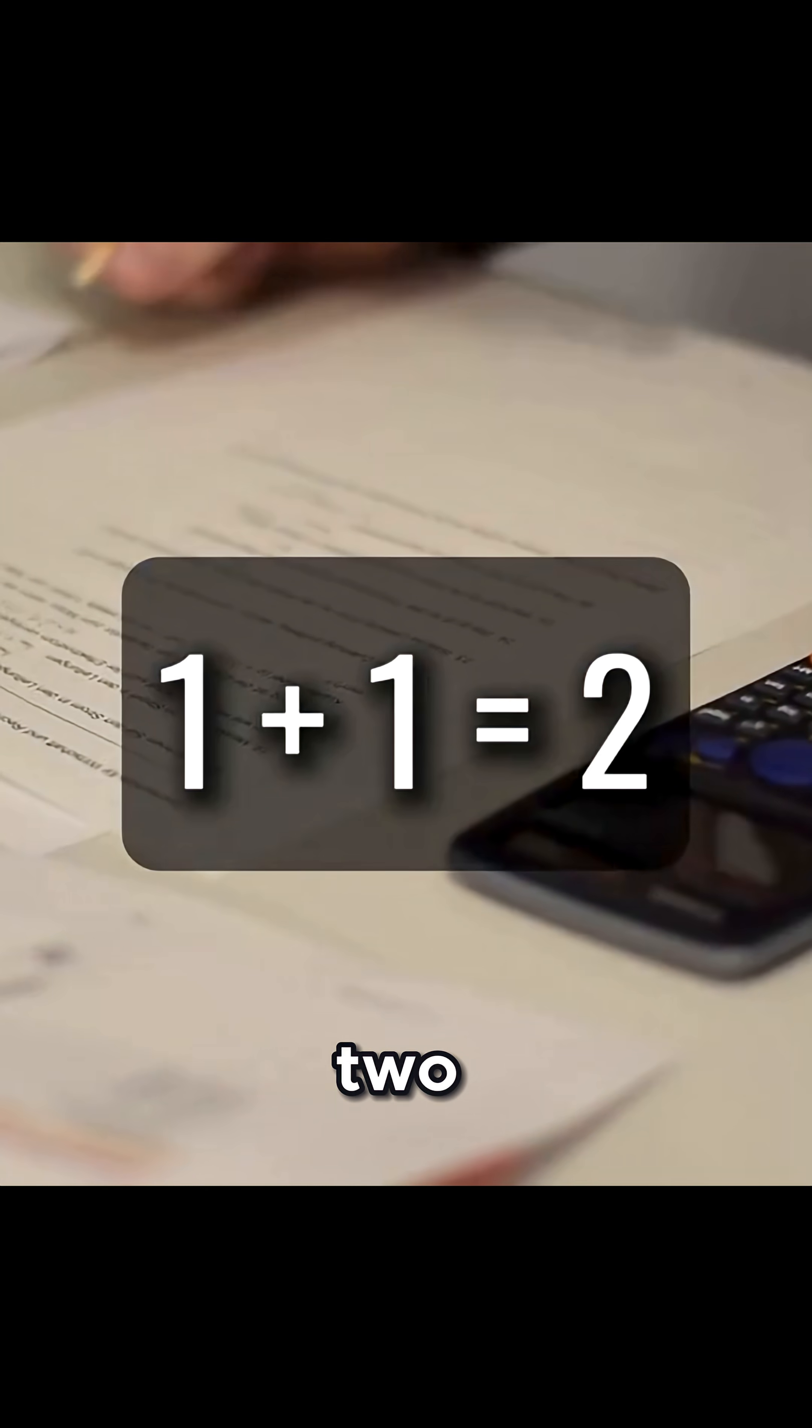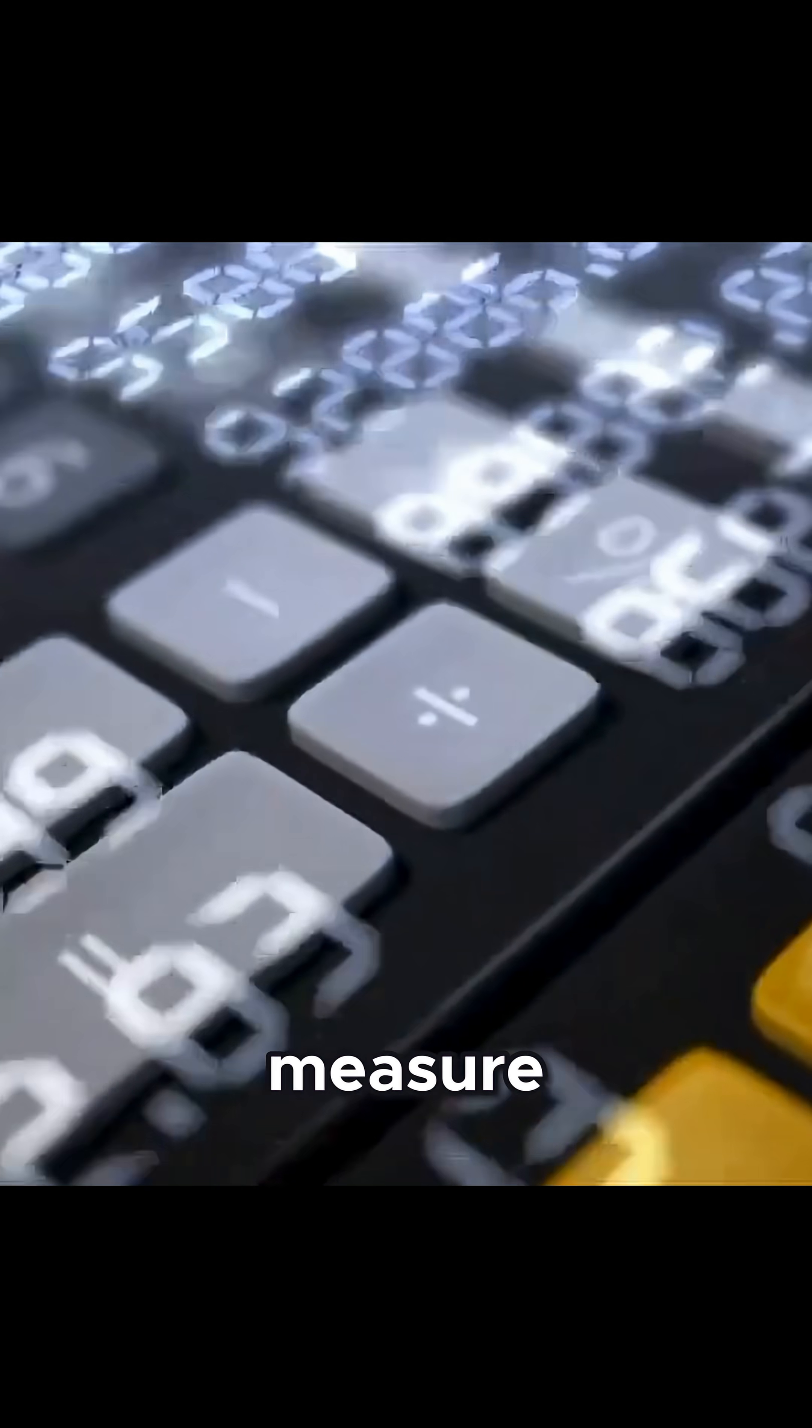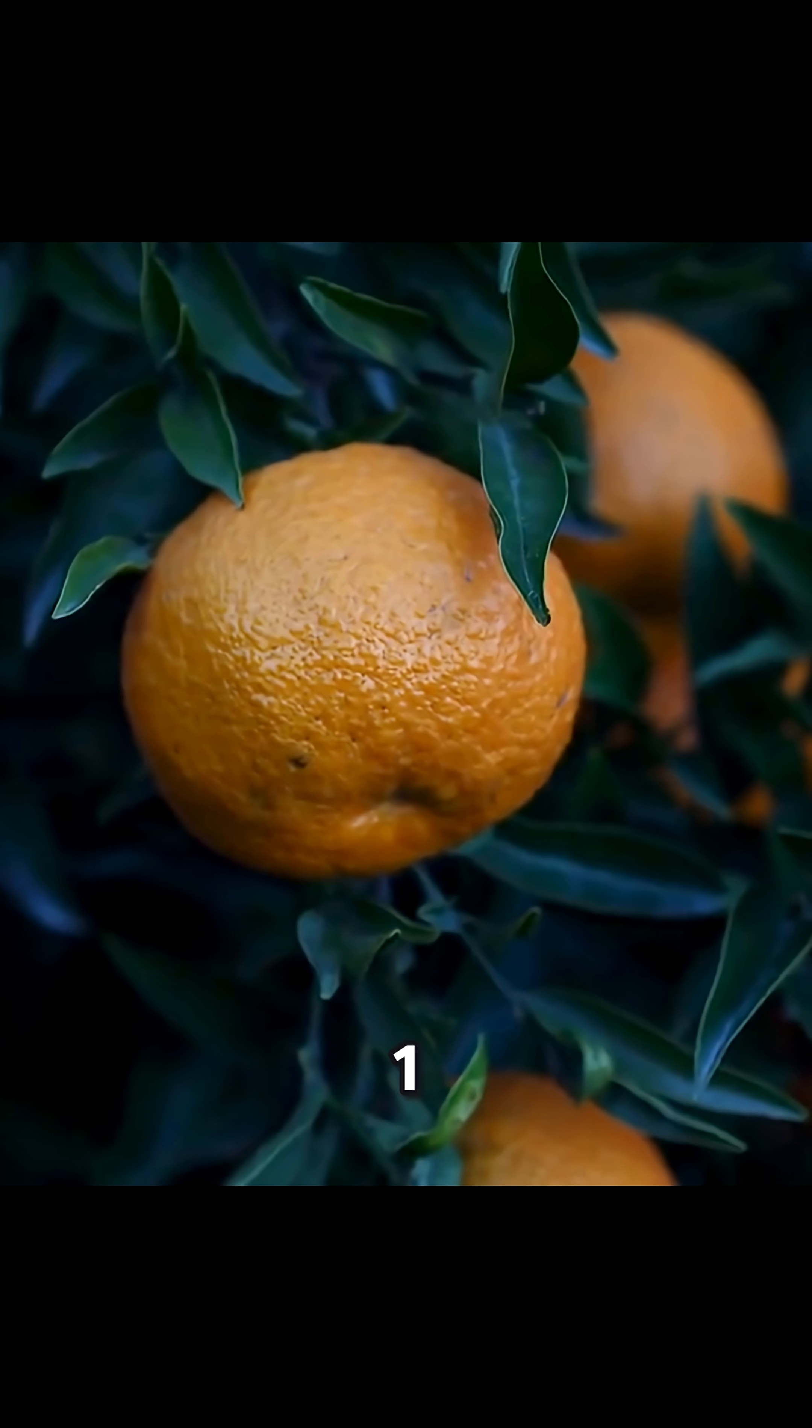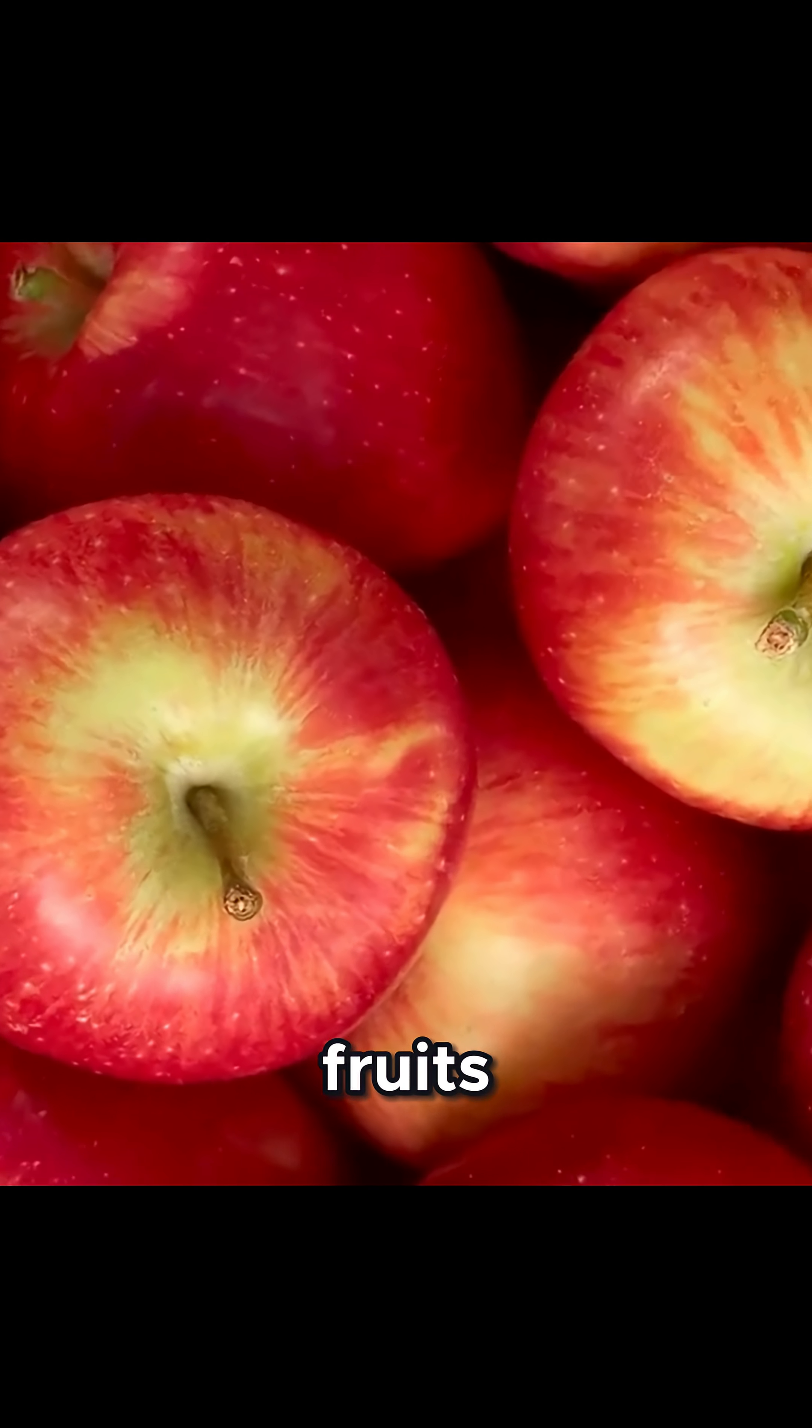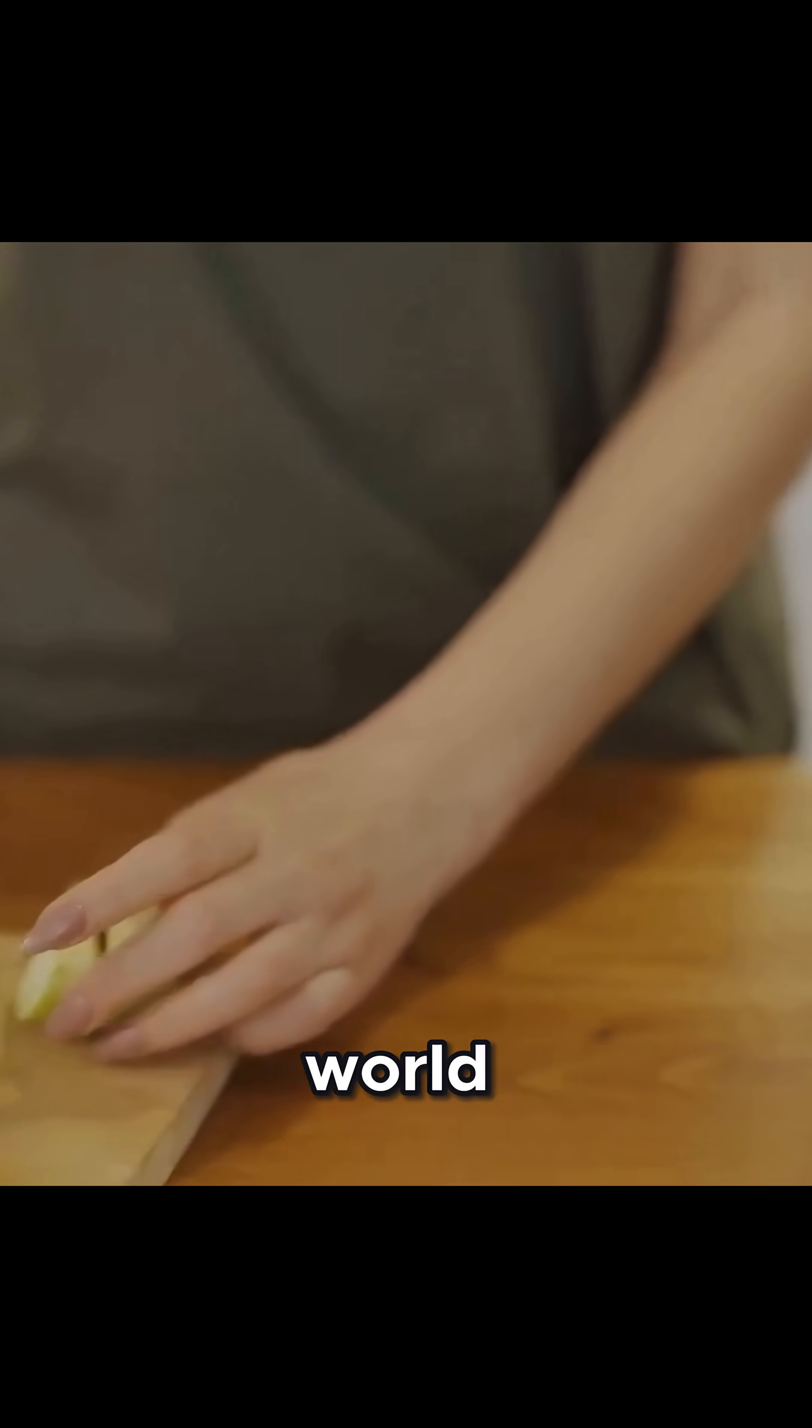In practice, we use this abstract rule to measure quantities. One orange plus one orange equals two oranges, or one orange plus one apple equals two fruits. Fruits are objects you can interact with in the real world. Numbers are abstract objects.